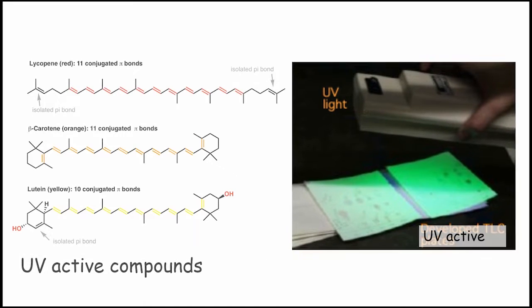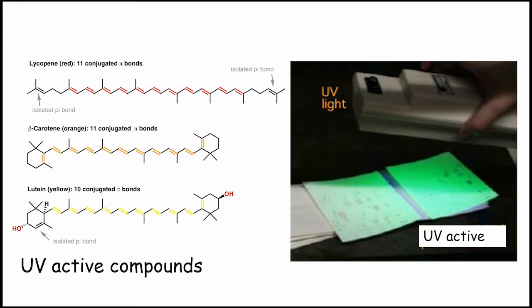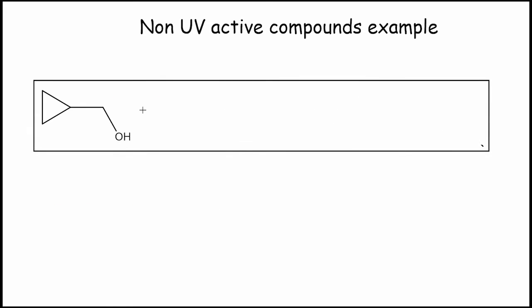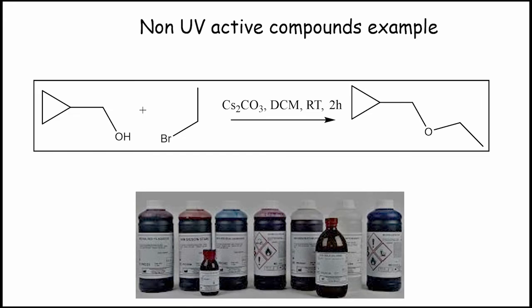To be UV active, compound must possess a certain degree of conjugation which occurs most commonly in aromatic compounds. If your compound doesn't have certain level of double bond conjugation, then they are UV inactive. Let's understand this with one more example. Here you can see nothing, neither SM1 nor SM2 or product are UV active. To check the TLC for such molecules, we need to use certain types of staining agents. Let's learn about them one by one.